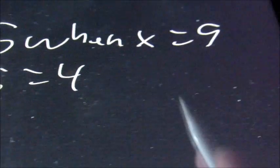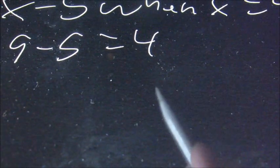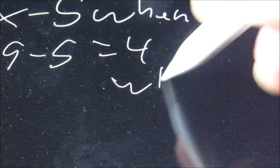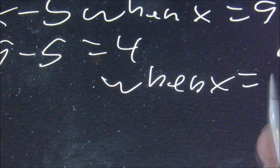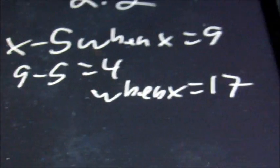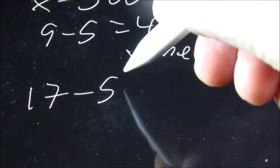Next, let's say we have that same thing but when x equals 17. So now we're just going to say 17 minus 5, and that equals 12.